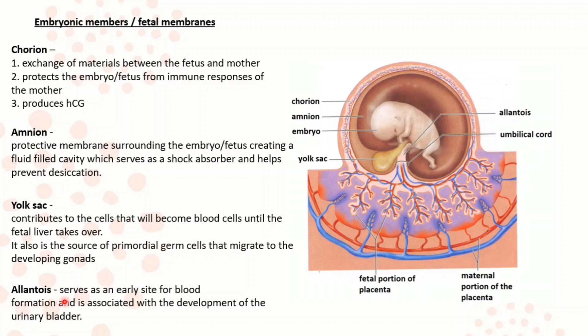The allantois is the fourth embryonic membrane. It serves as an early site for blood formation and is associated with the development of the urinary bladder.